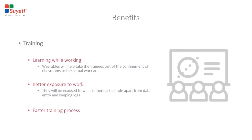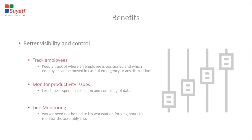Next is better visibility and control. Visibility in terms of tracking employees — keeping track of where an employee is positioned, which employee can be moved in case of emergency or any distractions. Monitor productivity issues, with less time spent in collection and compiling of data. Workers need not be tied to their workstation for long hours to monitor assembly lines. Wearables can help in both plant monitoring and employee monitoring. They reduce the need for employees to be tied to their workstations and enable them to monitor various aspects such as line speed, temperatures, pressures, or failures of any machine or equipment.